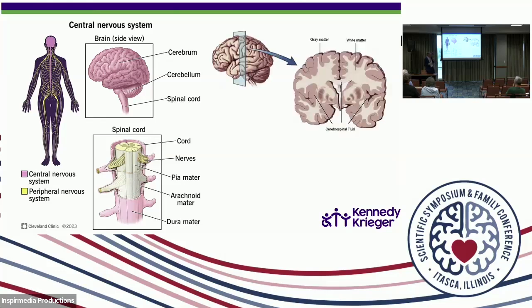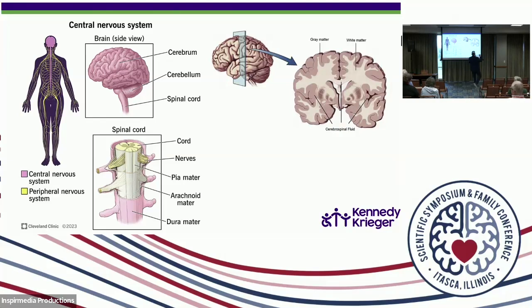Let's zoom in at the forebrain and take a cut through the middle to think about white matter. Leukodystrophies are white matter diseases. Looking at a slice of the forebrain from the front, you can see two hemispheres. There's a structure that's dark cream — we call that gray matter — and then there's the structure that's white — that's the white matter.